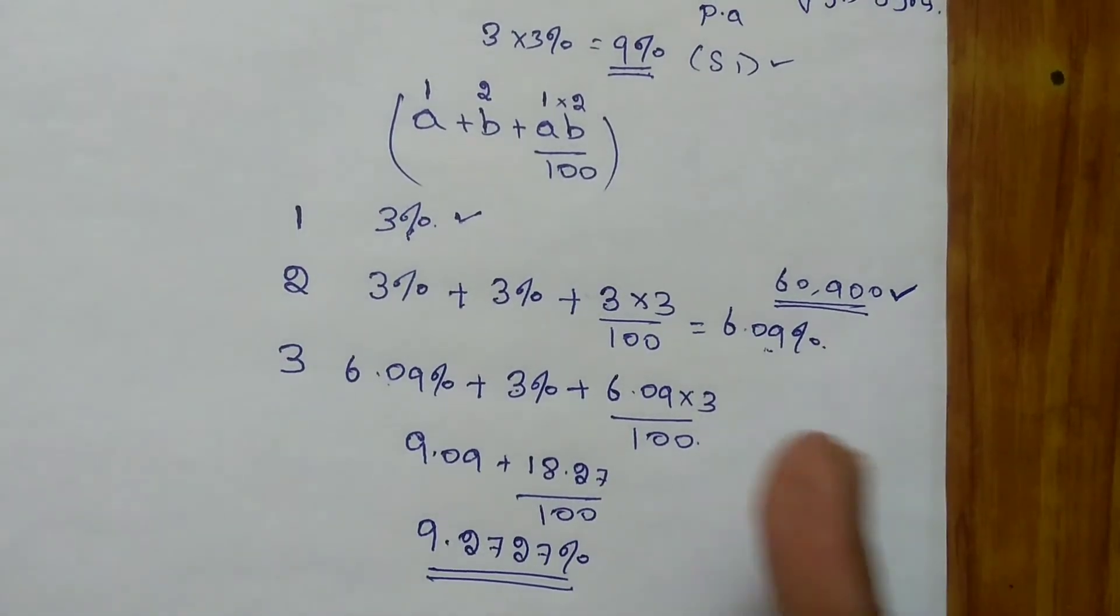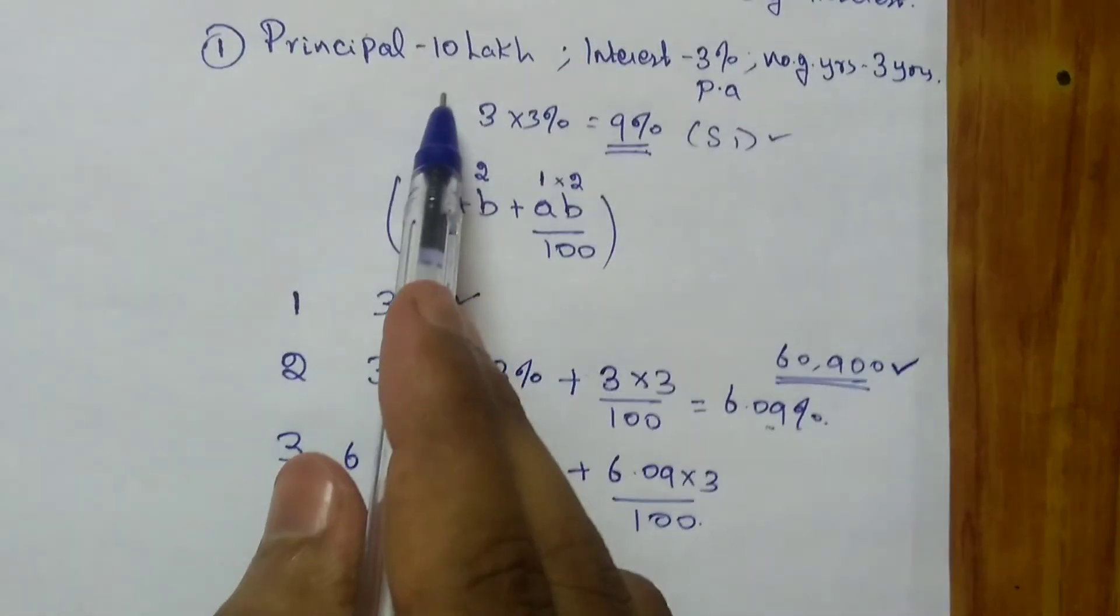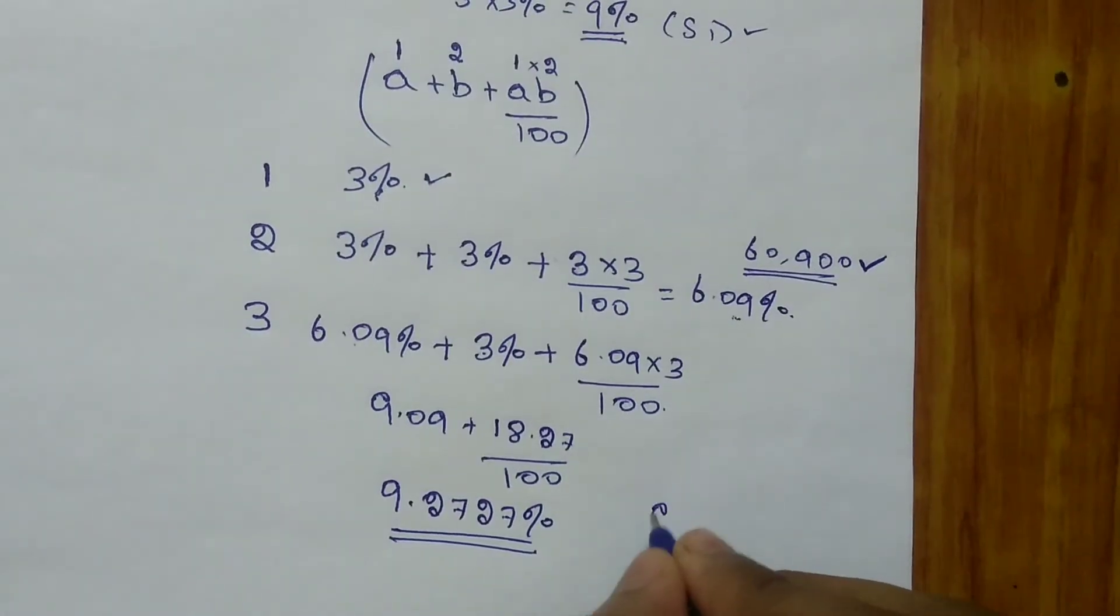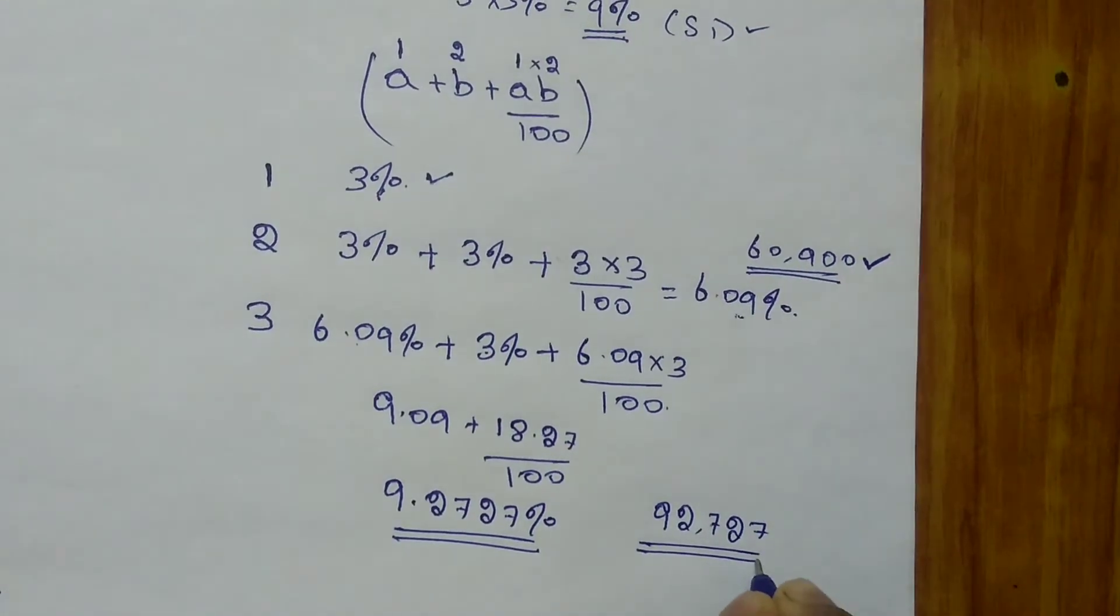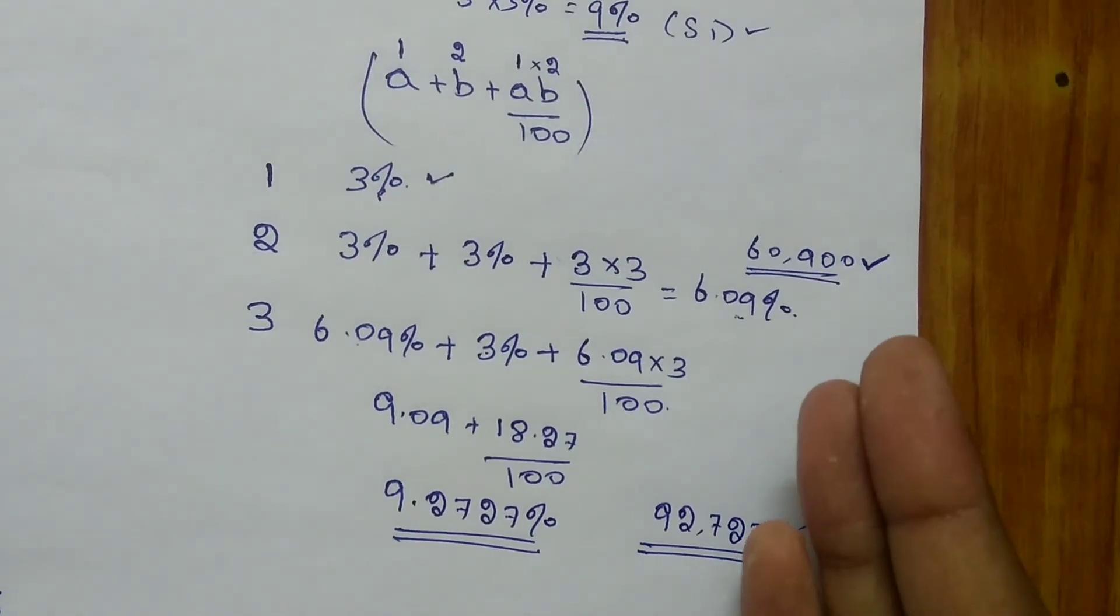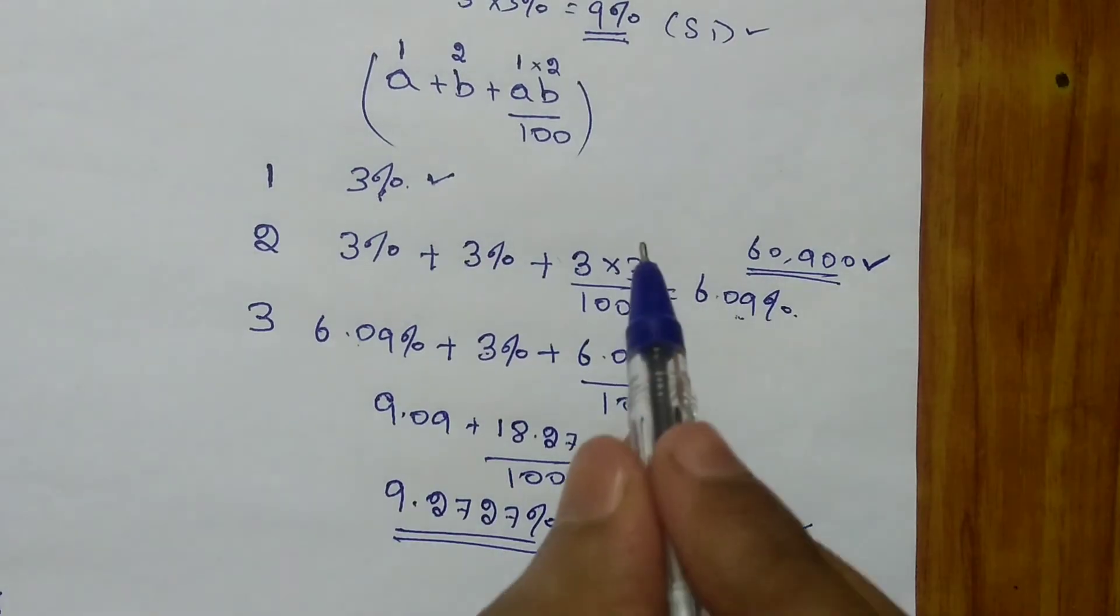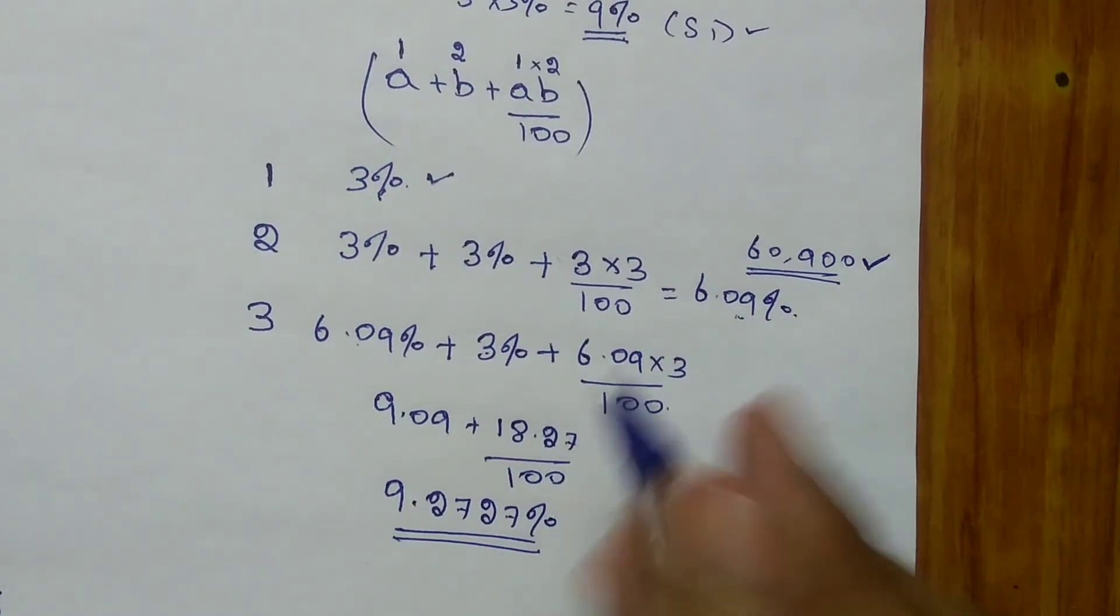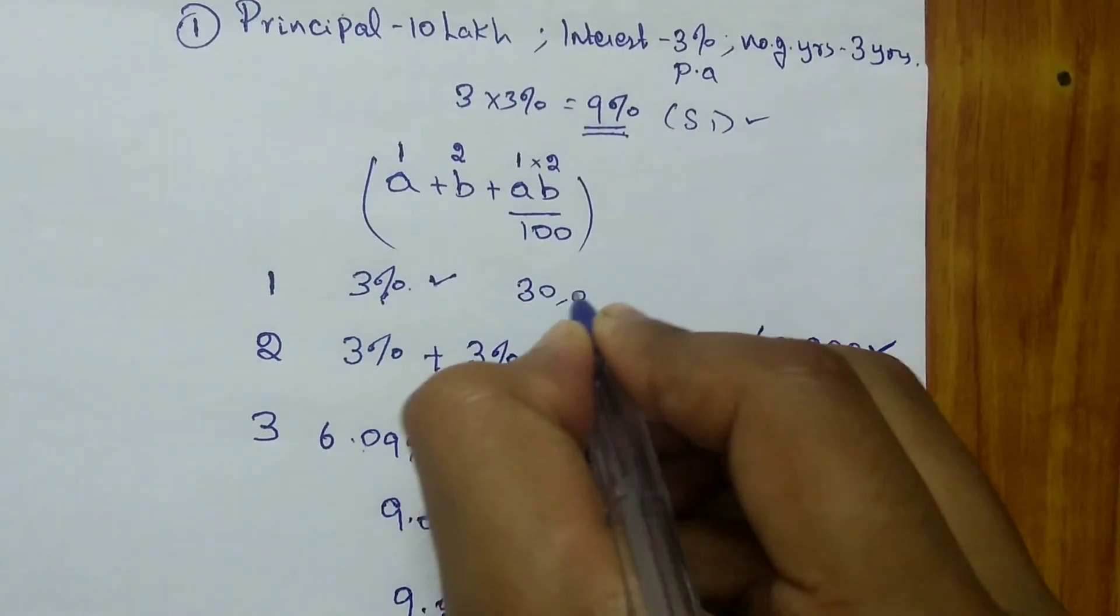So totally at the end of 3 years, you have to pay 9.2727% as compound interest. So 9.2727% of 10 lakh is 92,727 as compound interest at the end of 3 years. This is the total compound interest that you have to settle at the end of 3 years. If you are planning to settle the interest as well as principal at the end of first year, you have to pay only 3% of the principal you borrowed, which is 30,000 rupees.